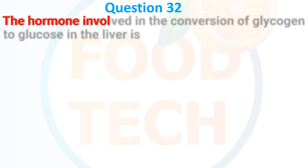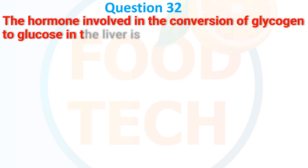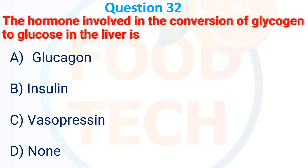Question 32. The hormone involved in conversion of glycogen to glucose in the liver: A. Glucagon. B. Insulin. C. Vasopressin. D. None. The correct answer is glucagon.